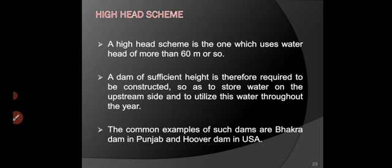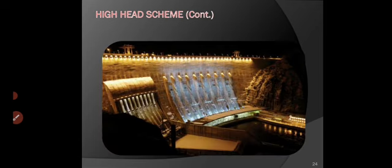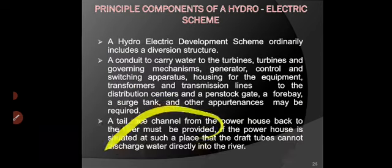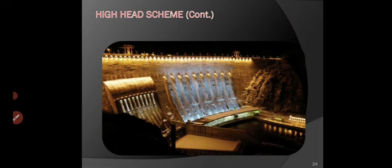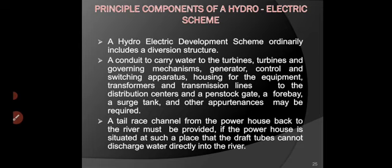A high head scheme uses water head more than 60 meters, so a dam of sufficient height is required to store water on the upstream side and utilize it throughout the year. Common examples of such dams are Bhakra Dam in Punjab and Hoover Dam in the USA. The powerhouse is located downstream of the dam for power generation. These are the classifications based on head and based on structure.